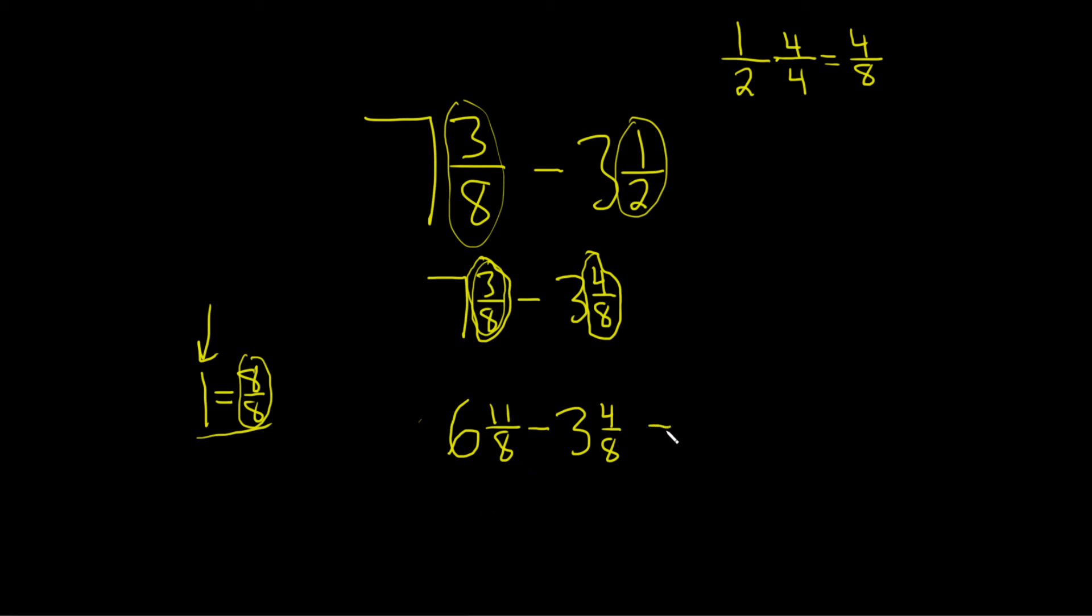And we can just go ahead and do the subtraction like this. Watch this. Now that everything is good, you just do 6 minus 3. So you get 3. And then 11 eighths minus 4 eighths is 7 eighths. And that would be the final answer.